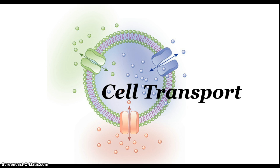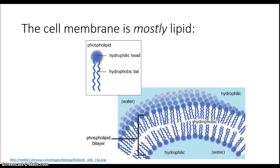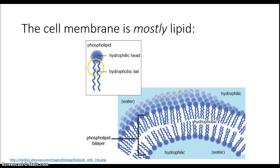We know a little bit about the cell membrane — that it is mostly lipid, but there are two layers. This bilayer of lipids has a number of components like the hydrophilic head, which interacts with water on the inside and the outside of the cell, and these hydrophobic tails, which interact only with each other.